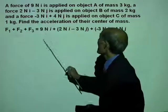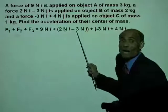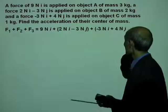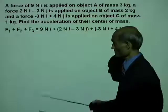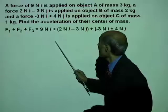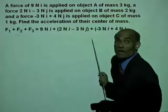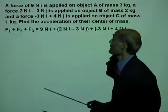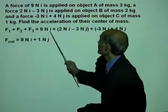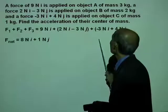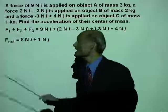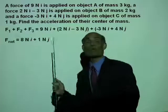F1 is 9N·i. F2 is 2N·i minus 3N·j. F3 is negative 3N·i plus 4N·j. When we add them, we add the X components: 9N·i plus 2N·i minus 3N·i equals 8N·i. Similarly, adding the Y forces: negative 3N·j plus 4N·j equals 1N·j. So the net force is 8N·i plus 1N·j.